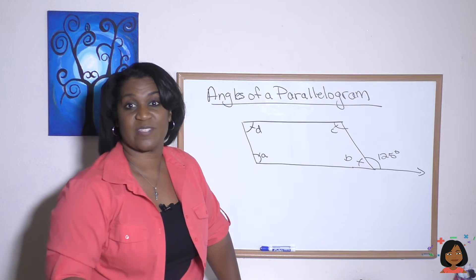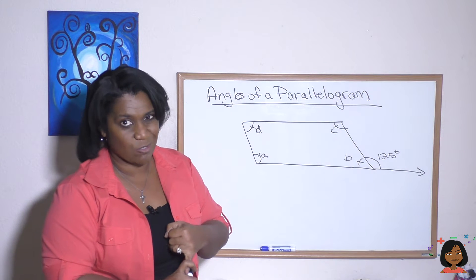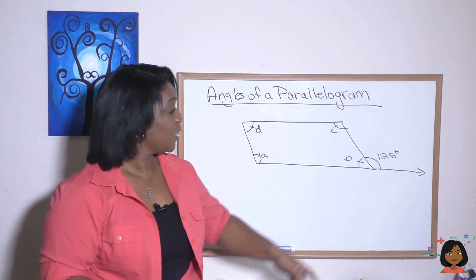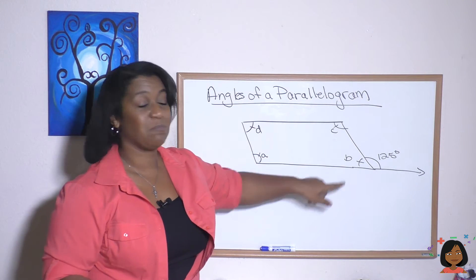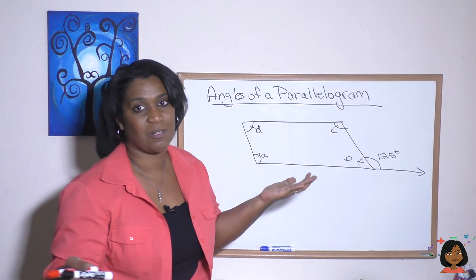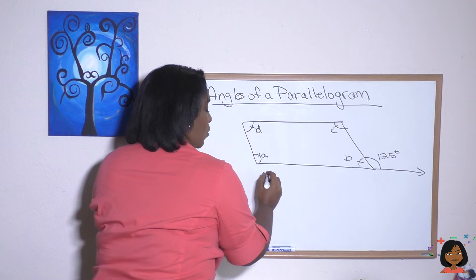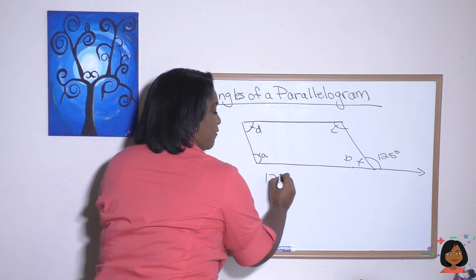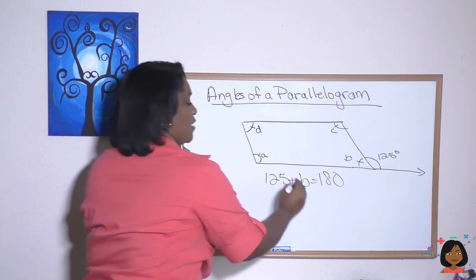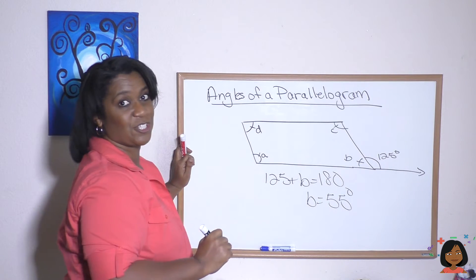Well, let's use the rules that we know. We know two rules. Adjacent angles equal 180 degrees because they're supplementary. And non-adjacent angles are equal to each other. Well, 125 and B have a relationship. They are adjacent, which means they equal 180 degrees. So angle B will be, let's see, 125 plus angle B equals 180. And if we do our subtraction, we see that B equals 55 degrees.